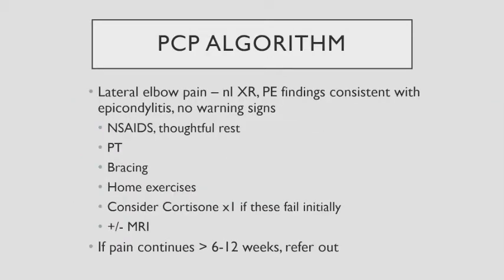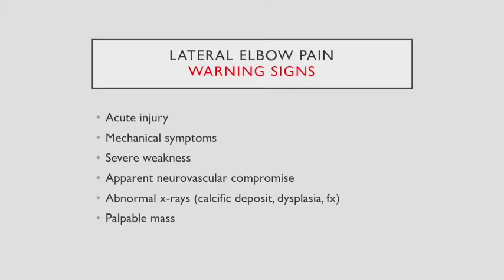As PCPs, if someone comes in with lateral elbow pain, normal x-rays, a physical exam consistent with epicondylitis, and no warning signs: thoughtful rest, anti-inflammatories, send them for physical therapy, try a counterforce brace and make sure they wear it correctly. Give them a home exercise program, maybe try one cortisone injection if all else fails, then plus or minus an MRI and referral. If pain continues more than 6 to 12 weeks, have them see a specialist. Warning signs for referral: acute lateral elbow pain after injury, clicking, clunking, popping, catching, or locking, severe weakness, neurovascular compromise, calcifications or dysplasia on x-rays, or a palpable mass.